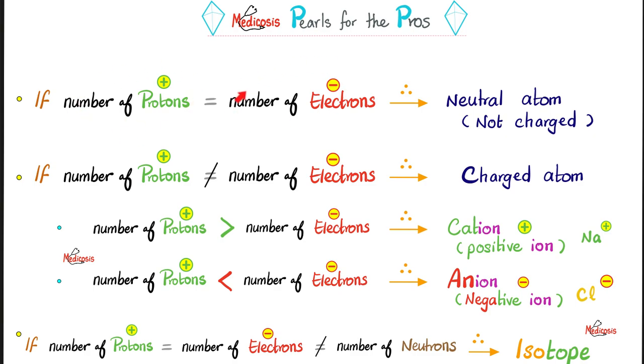If the number of protons and the number of electrons are equal, however, they do not equal the number of neutrons, that's an isotope, and please refer to previous videos in this playlist.